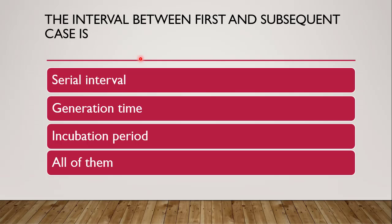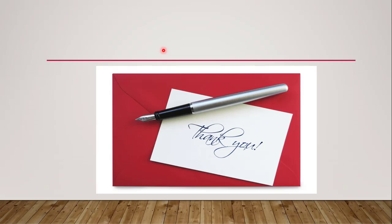Next question: the interval between the first and subsequent cases — whether it is serial interval, generation time, incubation time, or all of them. The correct answer is serial interval. When there is an interval between the occurrence of the first case and a subsequent case, it is called the serial interval. With this, we conclude a few MCQs from Epidemiology Part 5, and we will continue with more parts from the same chapter. Thank you.